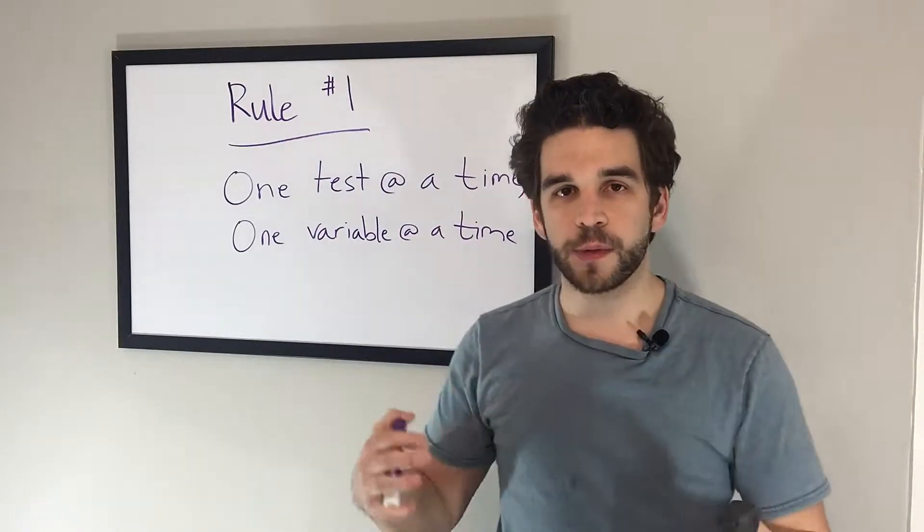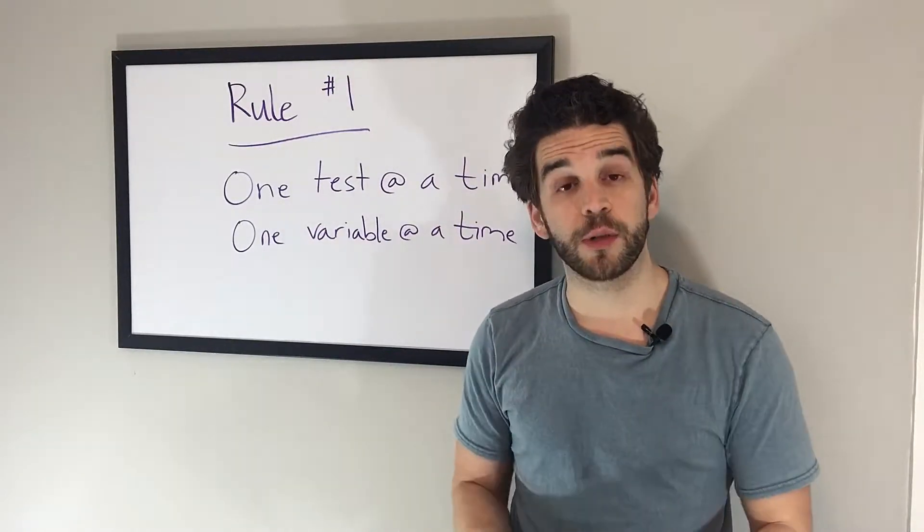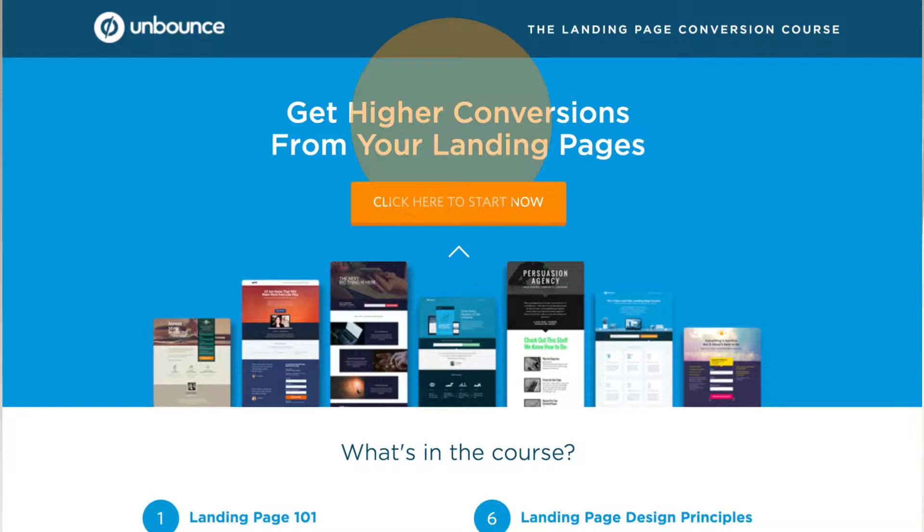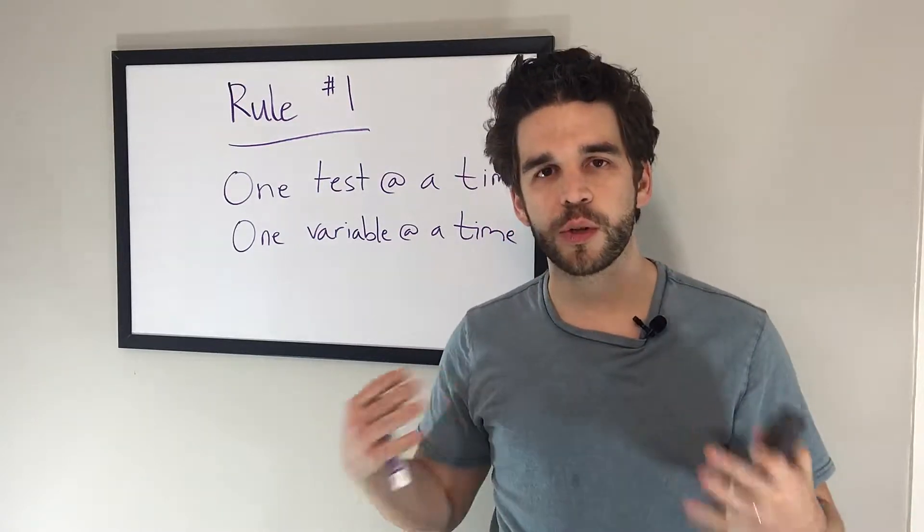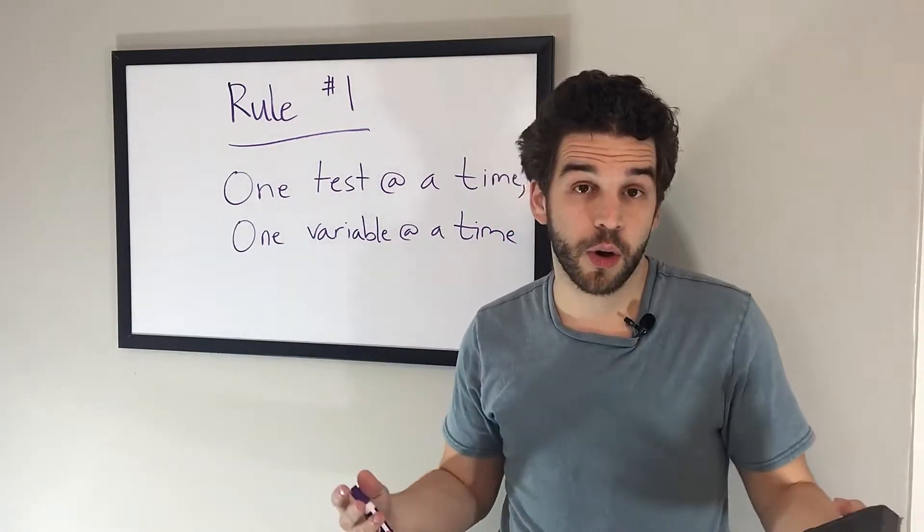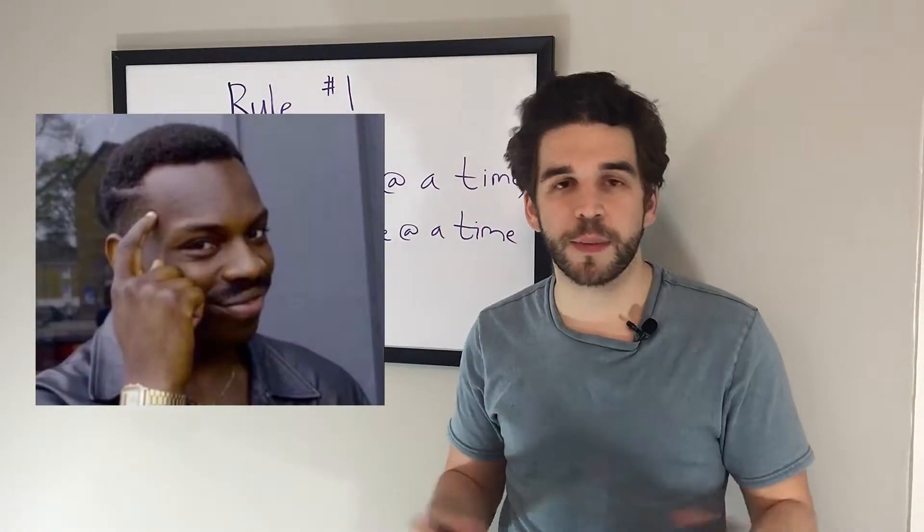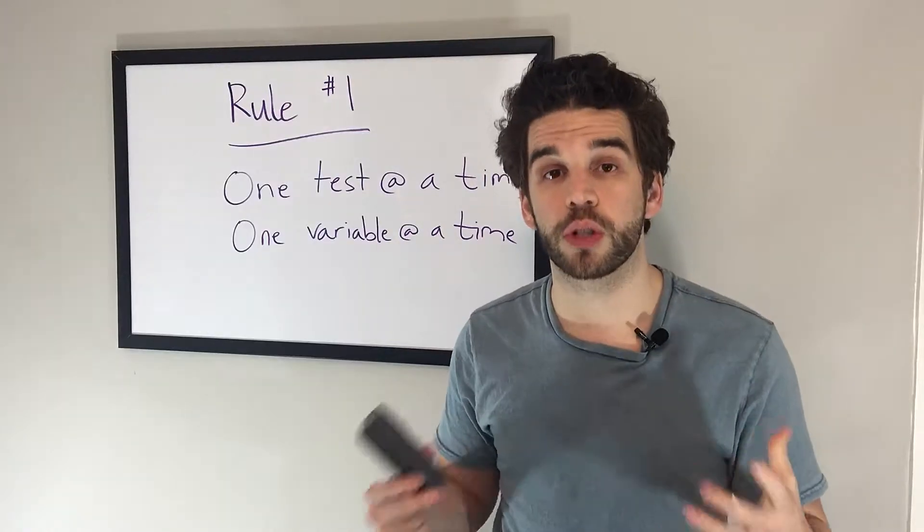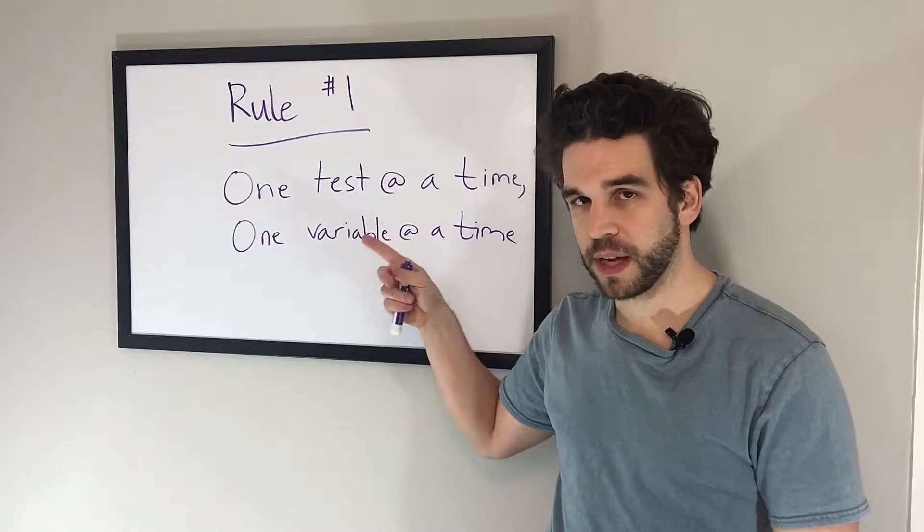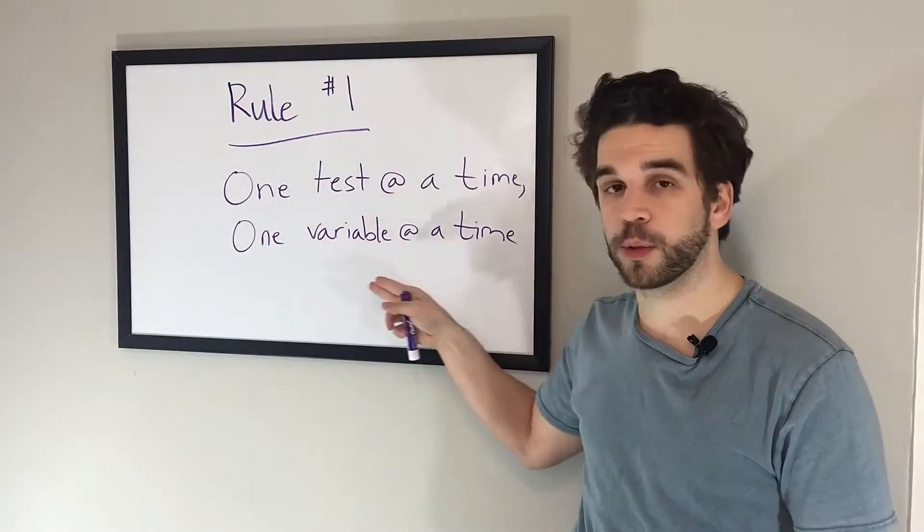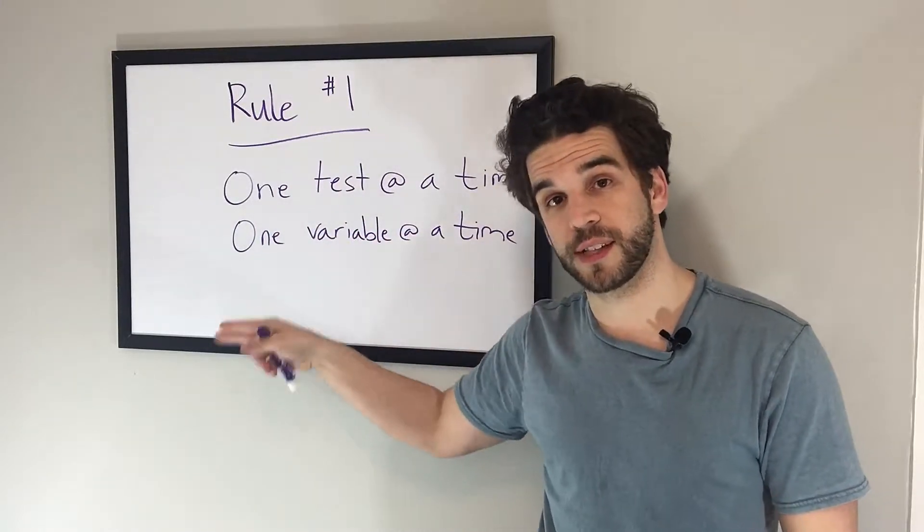So if you're trying to optimize a landing page, don't test the headline at the same time as your image, at the same time as your bullet points, at the same time as your background color. Because if you've got four tests going, how are you going to know which one is making the difference? You might see a change, but you're going to have no clue what's making the difference. So only run one test at a time and only test one variable during that single test.